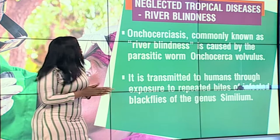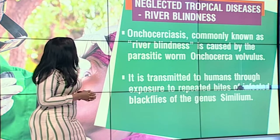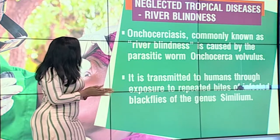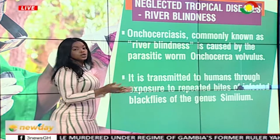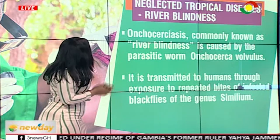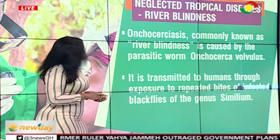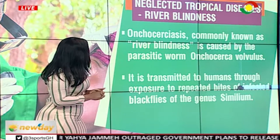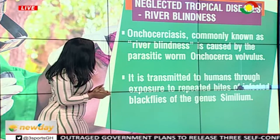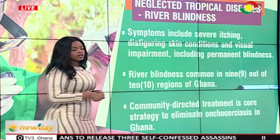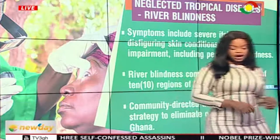We're doing health now, talking about neglected tropical diseases, focusing heavily on river blindness. Onchocerciasis, which we know as river blindness, is caused by the parasitic worm Onchocerca volvulus and is transmitted to humans through repeated bites of infected black flies of the genus Simulium. We've been joined in studio by Dr. Benjamin Malfo, who is the programs manager of neglected tropical diseases in Ghana.